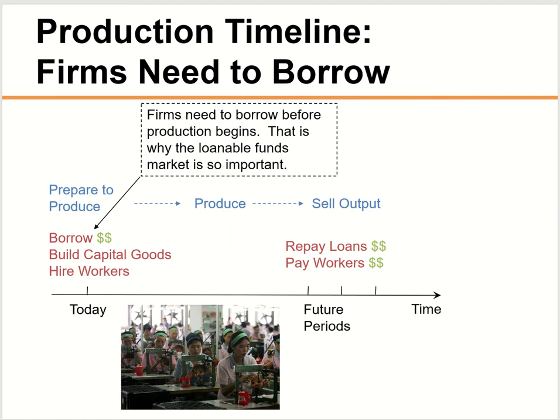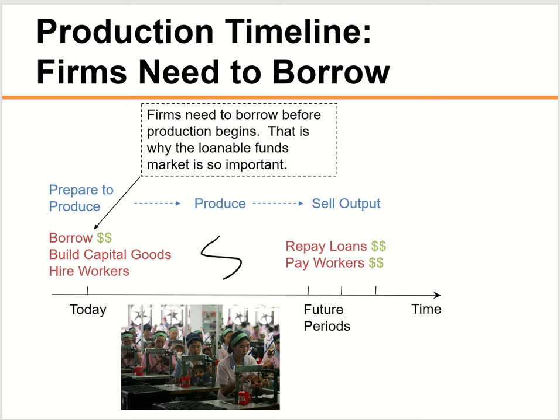The reason companies borrow money is to run their business and expand as soon as possible, because otherwise they'd miss opportunities. The timeline is: borrow money today, buy capital — machines, technologies — hire workers, produce goods, and once they make a profit, pay back the loan and workers. Whatever is left over is their profit. If companies had to wait to save enough money first, they'd lose opportunities — imagine having a new computer idea faster than anybody else but waiting three or four years to save up, and by then the technology is obsolete. So companies borrow money, run the business, and pay the loan back.